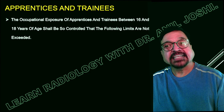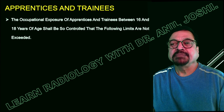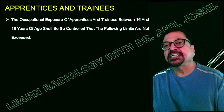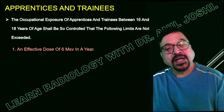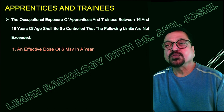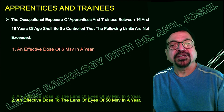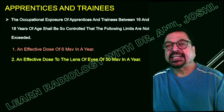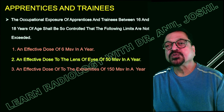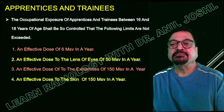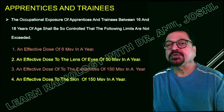The equivalent dose to the lens of the eye is 150 mSv per year — exceeding this makes the worker susceptible to premature cataract. The equivalent dose to the skin is around 500 mSv, showing that skin has the maximum tolerance to radiation. For apprentices and trainees between the ages of 16 and 18, the limits are more restrictive: an effective dose of 6 mSv per year, lens of the eye not exceeding 50 mSv, and extremities within 150 mSv per year, and skin 150 mSv per year.